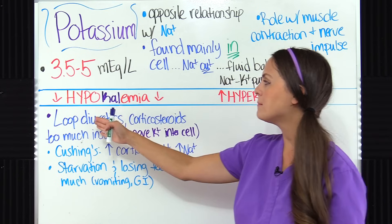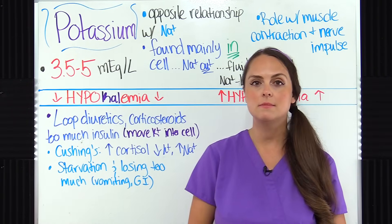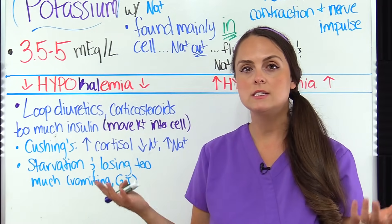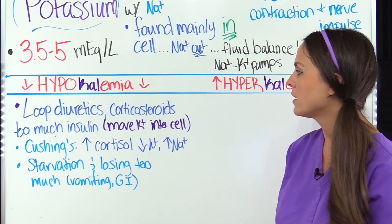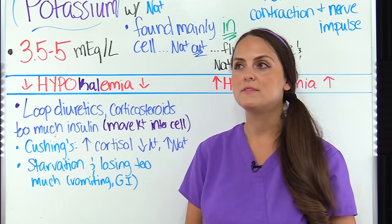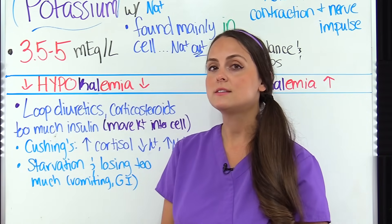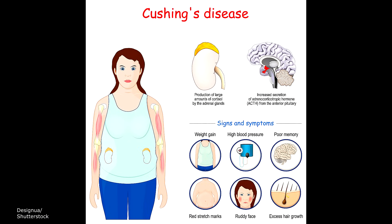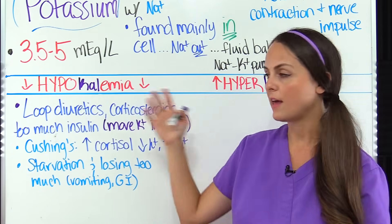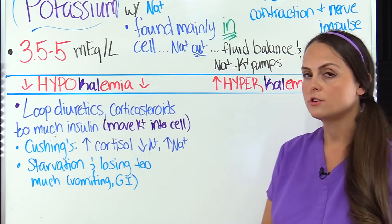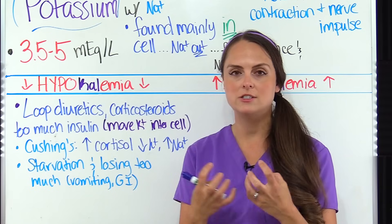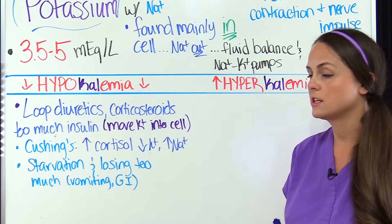Let's look at hypokalemia — low potassium in the blood. Loop diuretics like furosemide can cause this because they make the kidneys waste potassium, so watch patients on those closely. Corticosteroids can do this, and too much insulin causes potassium to move inside the cell, dropping blood levels. Cushing syndrome — high cortisol — decreases potassium and increases sodium. Starvation or extreme conditions where patients haven't been eating can cause this, as can losing too much potassium through GI juices via vomiting or NG tube suctioning.